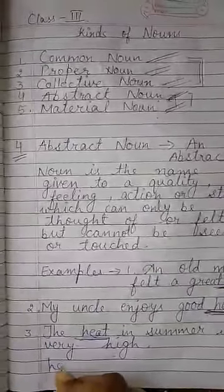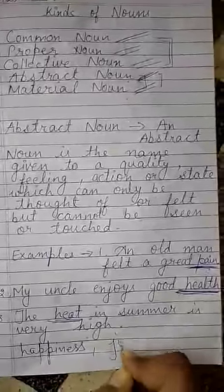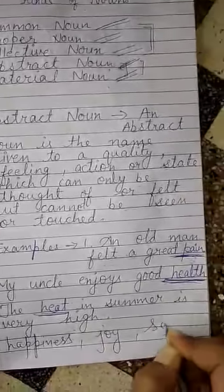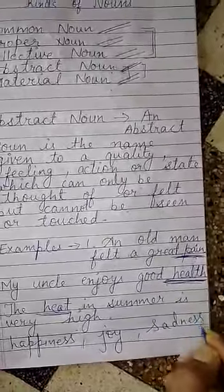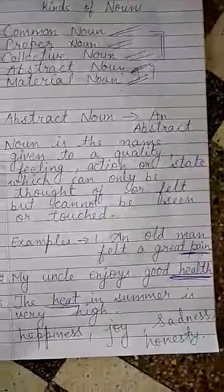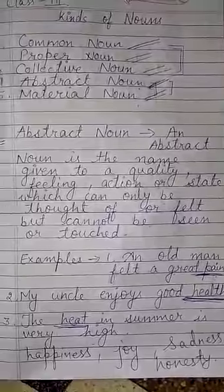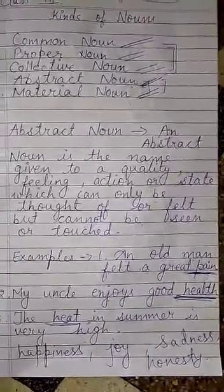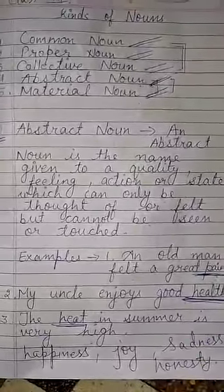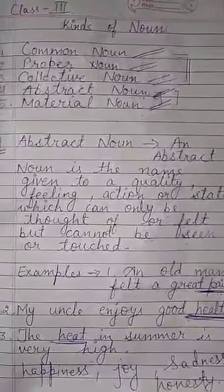Some more examples of abstract nouns are: happiness, joy, sadness, honesty. Yeh sab words jo hain — yeh feel karne ke liye hoti hain. Hum inhe mehsoos kar sakti hain ya phir inke baare mein soch sakti hain. Happiness ko hum touch kar sakti hain? No — they can only be felt or we can only think about them.